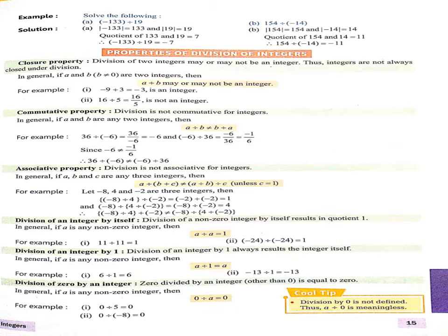Now the second property is the commutative property. Division is not commutative for integers. In this property, A divided by B is not equal to B divided by A. मतलब कि अगर हम एक digit को दूसरी digit से divide करते हैं और अगर हम इसका उल्टा करते हैं — दूसरी को पहली से divide करते हैं — तो answer हमारा same नहीं हो सकता। Example: 36 divided by minus 6 gives minus 6, and minus 6 divided by 36 gives minus 1 by 6. So both are not equal.